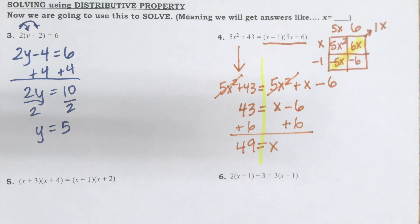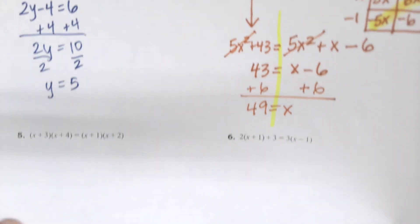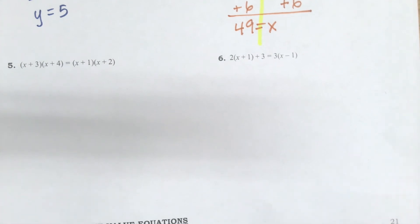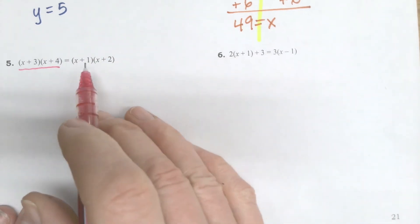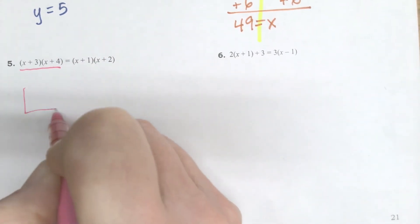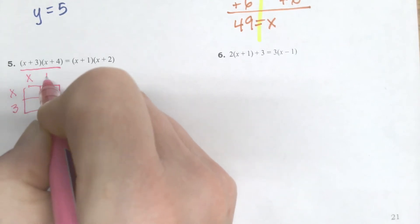So a little bit more work. In fact, when we look at problem number 5, it's going to be even more work because I'm going to have two box methods that I have to do. So let's get set up for number 5. I like to, when I'm working through these, pick different colors for each one. So for me, just so it stands out. So that first one I'm going to do in this pink. I'm going to make my box method for that. x plus 3, x plus 4.